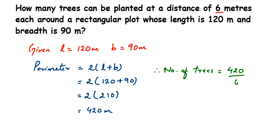We can cancel 420 and 6 directly. Since 42 comes in the 6 times table — 6 sevens are 42 — and we have a 0 left, we put it along with 7 to get 70. So 70 trees can be planted around the rectangular plot with a distance of 6 meters between each tree. I hope this question is clear. If you have any further questions or doubts, you can drop a comment. Thank you so much for watching.